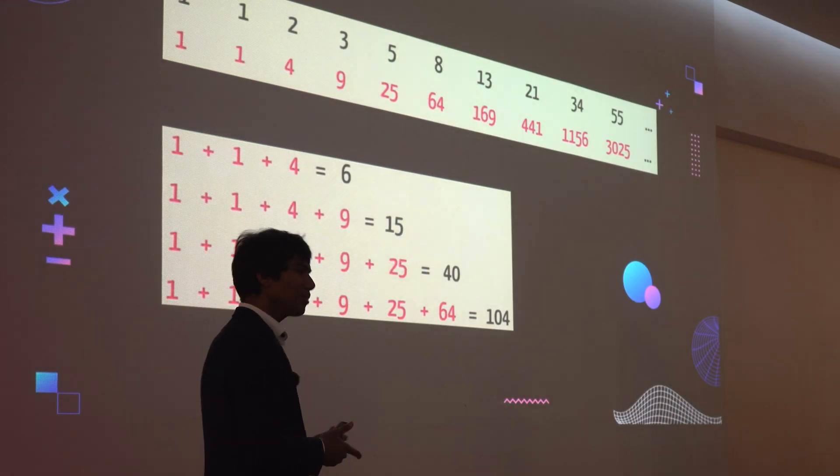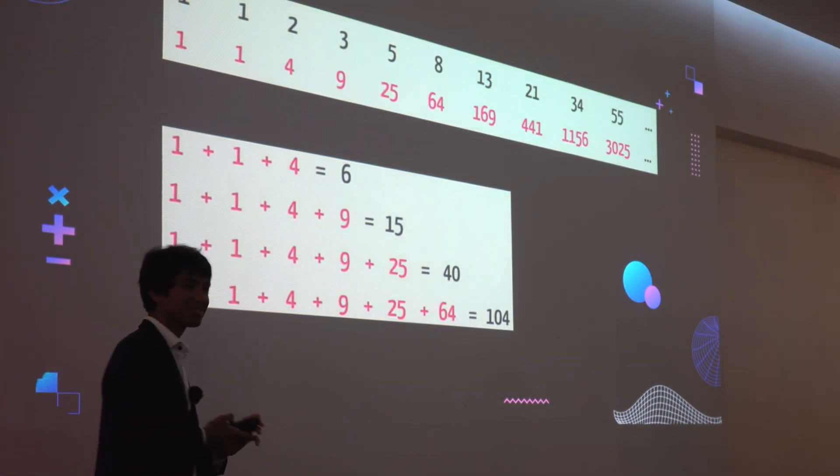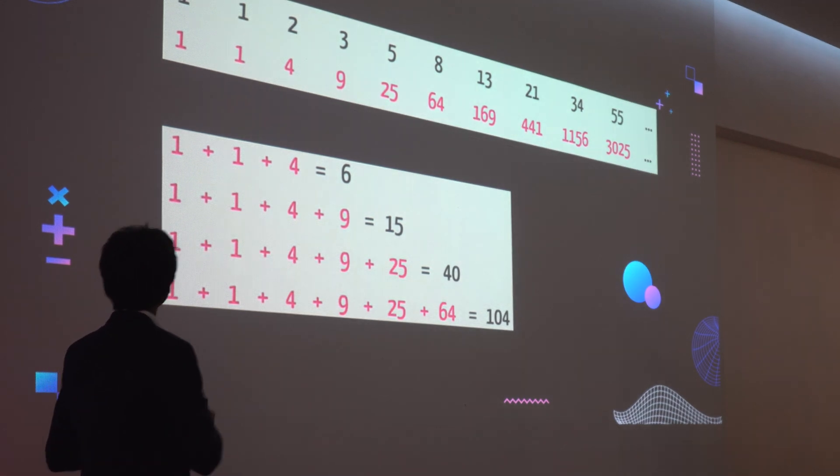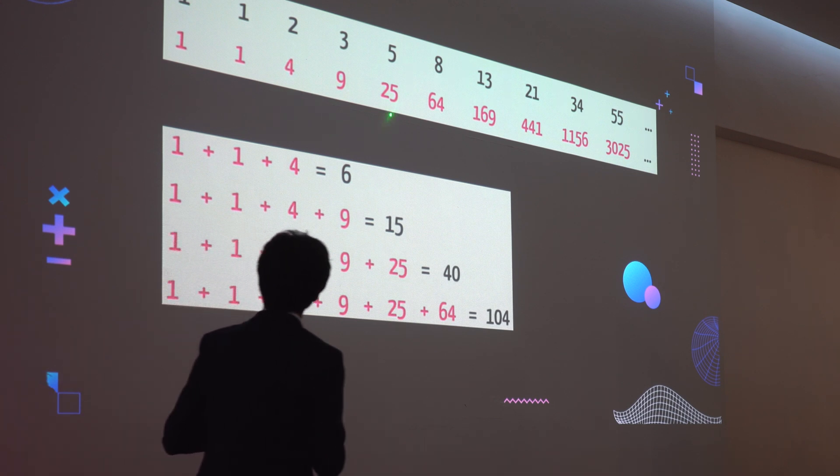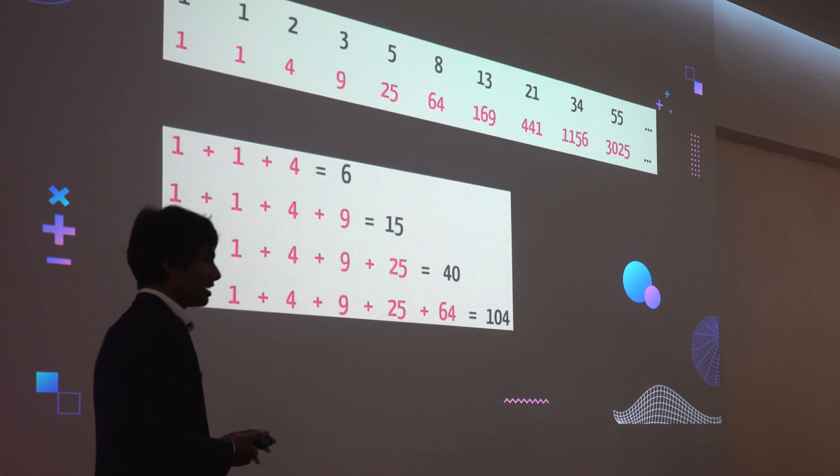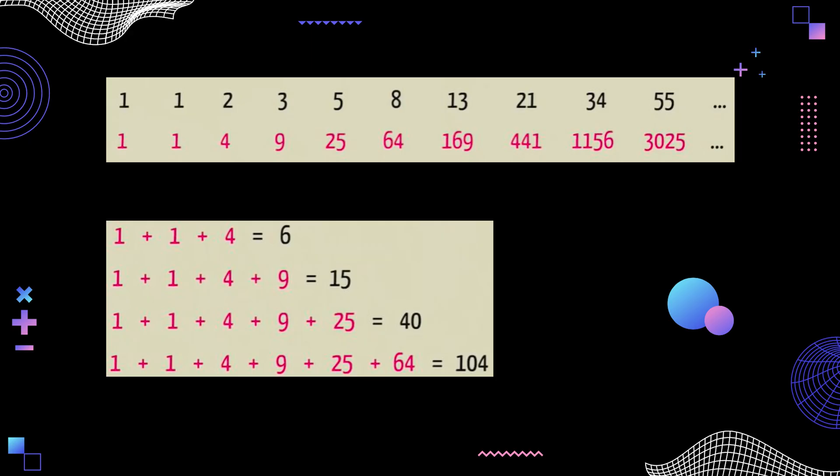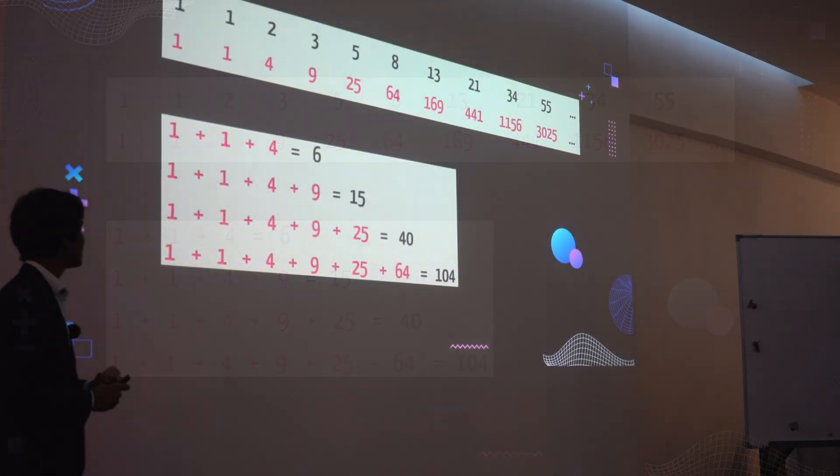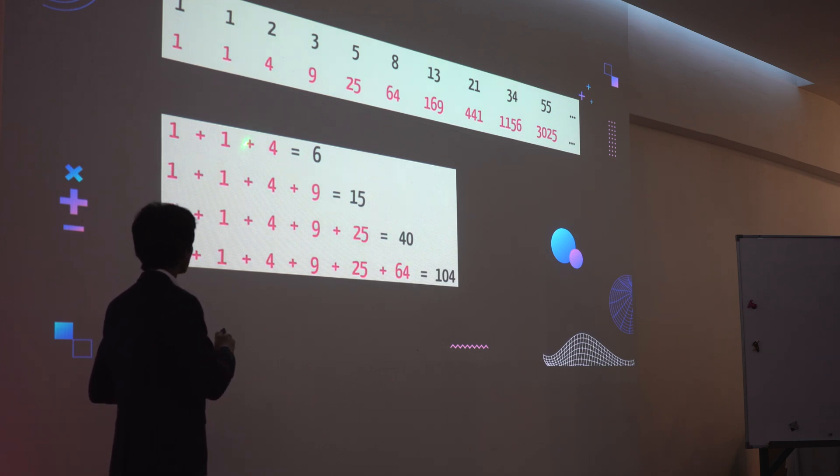Now, suppose you are a fan of squaring numbers. Let's say we were to square the Fibonacci numbers themselves. We would get 1, 1, 4, 9, and 25, etc. Now, let's say we were to add these numbers. When we add the first three, we get 6. Add the 4, we get 15. 5, 40, and 104. But what we notice here is absolutely beautiful. The Fibonacci numbers are embedded right into the answers and the sums of these squared Fibonacci numbers.